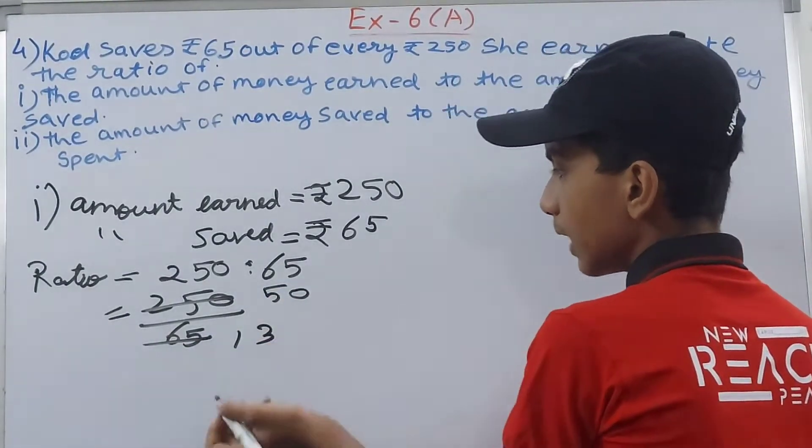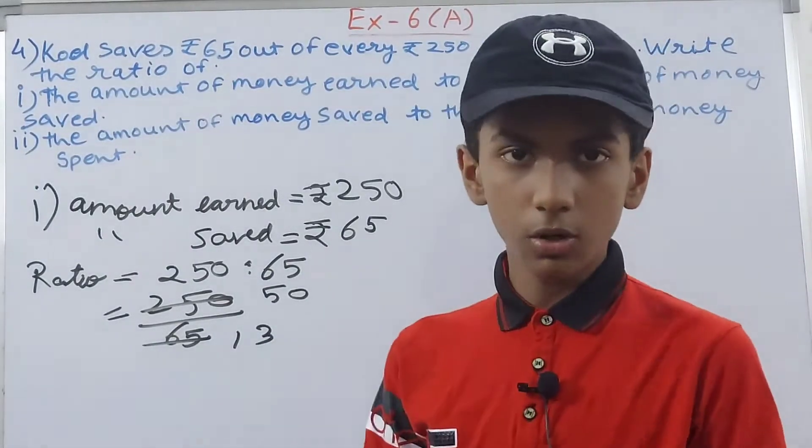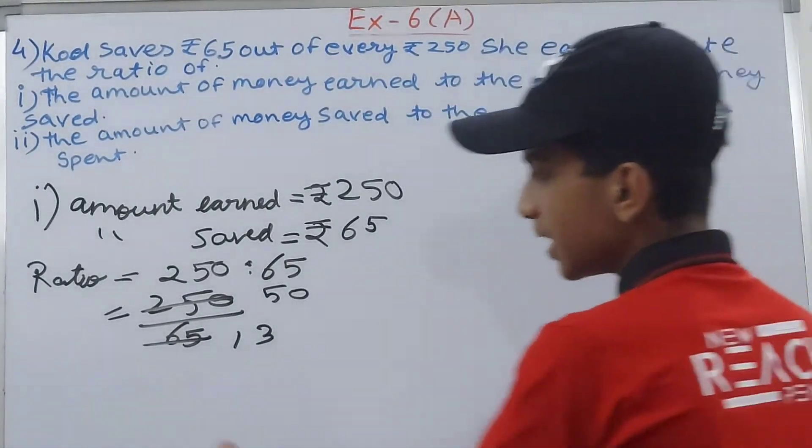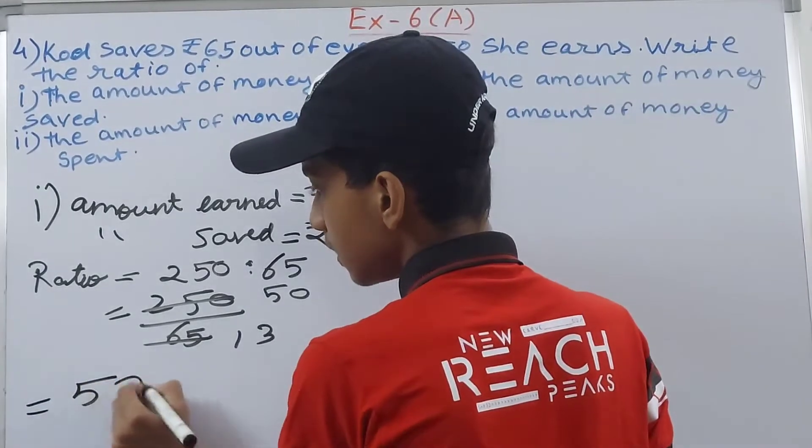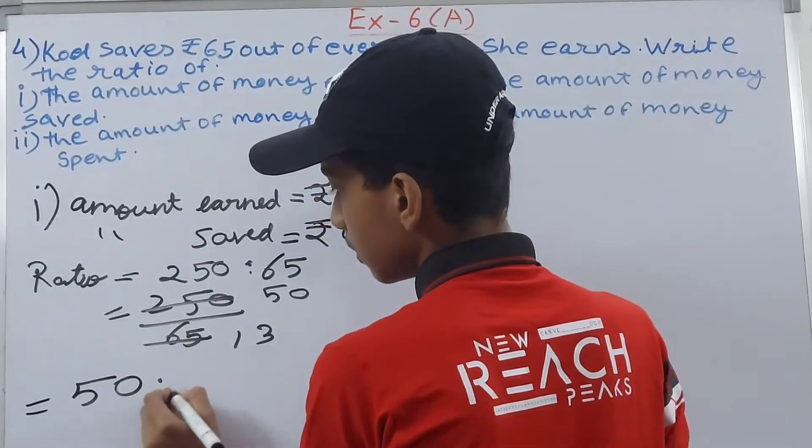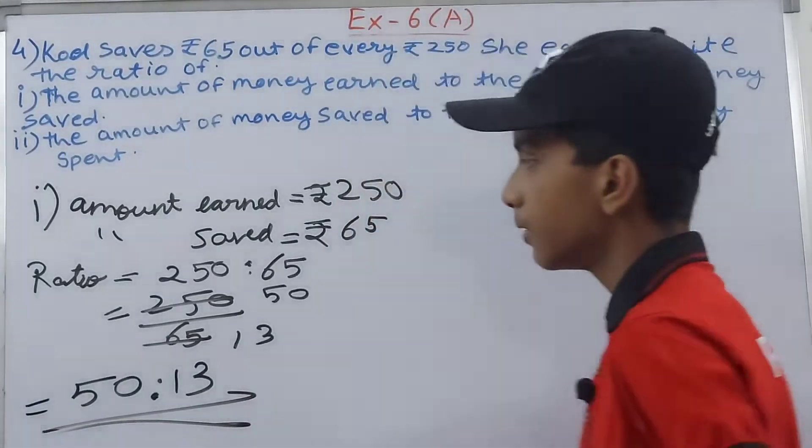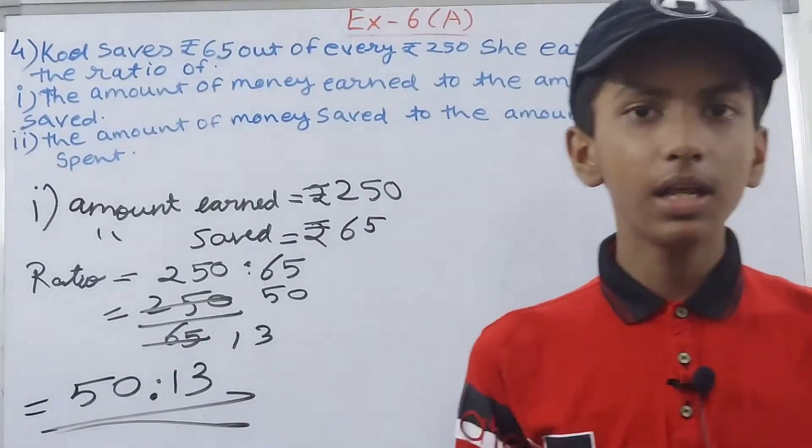Can we simplify this anymore? 13 is a prime number so we cannot simplify it. So ratio becomes 50 is to 13. This becomes the answer of the first part.